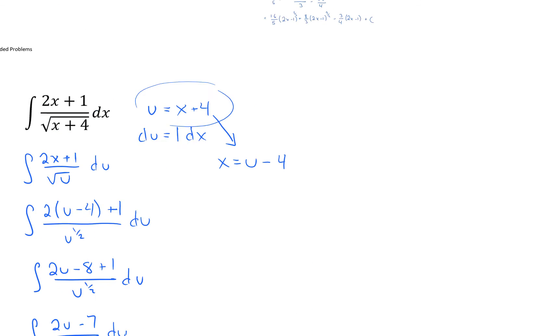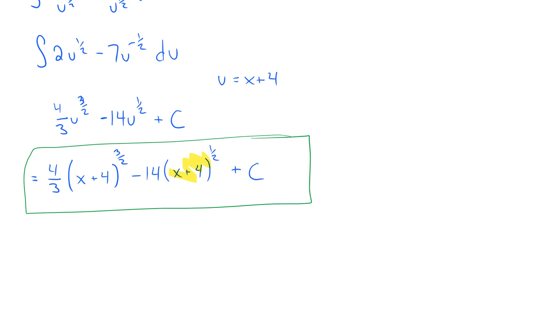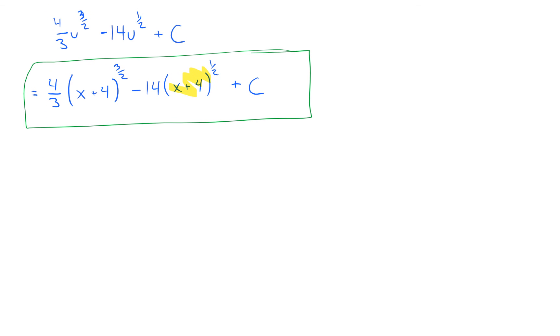So there we had to make our u substitution, u equals x plus 4. But then we also had, after we were right here, we were left with an x still. So we had to make this substitution. So two substitutions going on. What was the value of x in terms of u? And we end up with this our final answer.